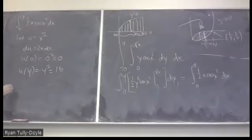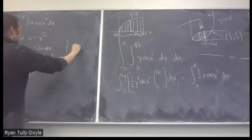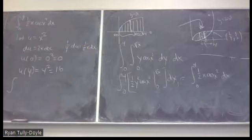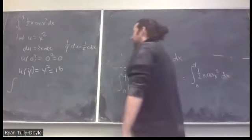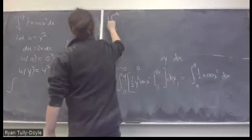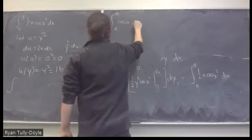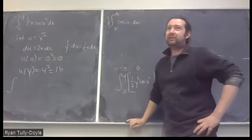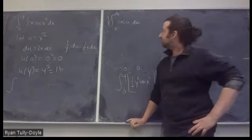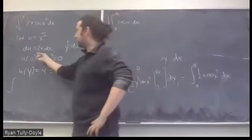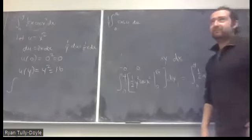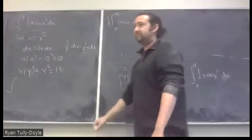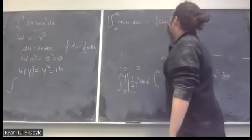We have ∫₀⁴ (1/2)x cos(x²) dx. Let u = x². Then du = 2x dx, so (1/2) du = x dx. When x = 0, u = 0; when x = 4, u = 16. We get ∫₀¹⁶ (1/4) cos(u) du. We pick up a one-fourth factor out front.